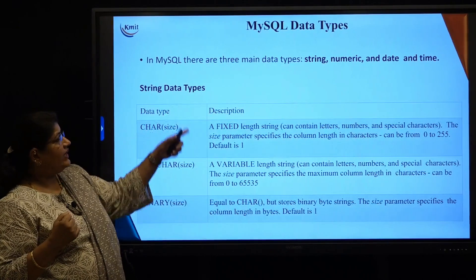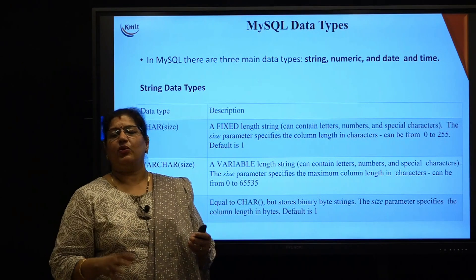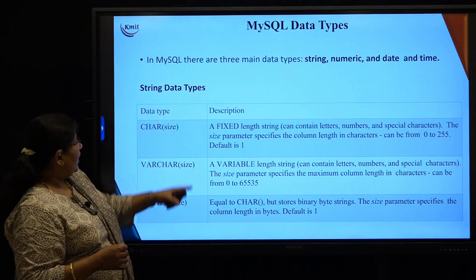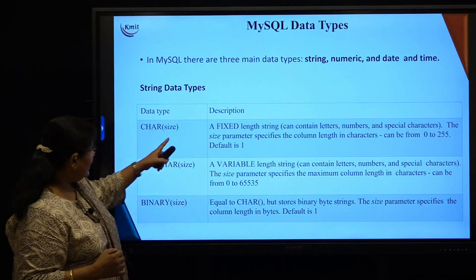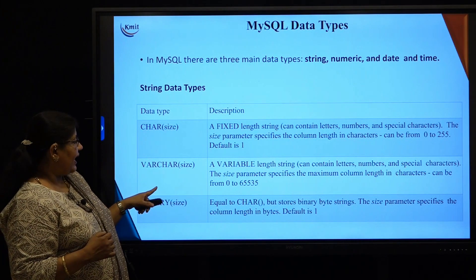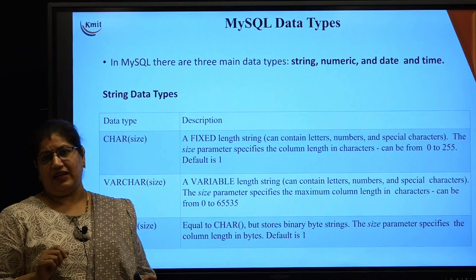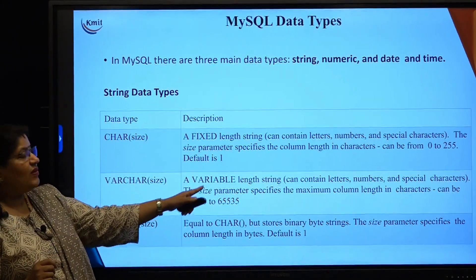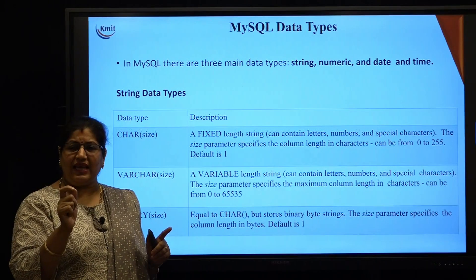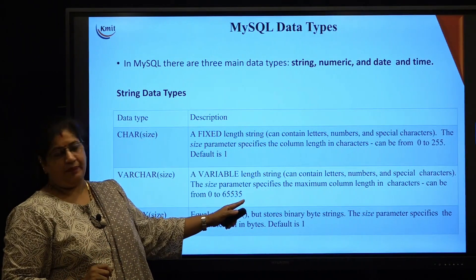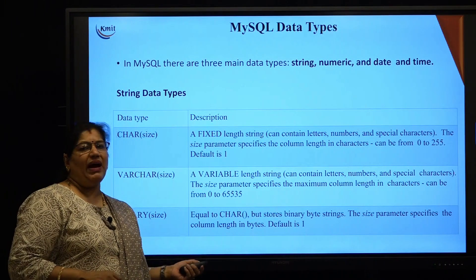Let us look at the data types available in MySQL, since we are going to use MySQL as our RDBMS. There are three categories: string, numeric, and date and time. Under string, we have CHAR and VARCHAR. CHAR is fixed length — if you define 10 characters, it always allocates 10 bytes. VARCHAR is variable length — if you define 50 but the value has only 10 characters, only 10 bytes are allocated. BINARY is similar to CHAR but stored as a binary byte string.